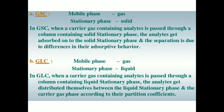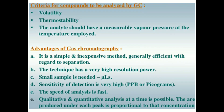In GLC, the mobile phase is gas and the stationary phase is liquid. When a carrier gas containing analytes is passed through a column containing a liquid stationary phase, the analytes distribute themselves between the liquid stationary phase and the carrier gas phase according to their partition coefficient. The criteria for compounds to be analyzed by GC include volatility, thermostability, and the analytes should have a measurable vapor pressure at the temperature employed.